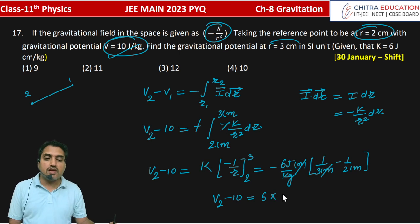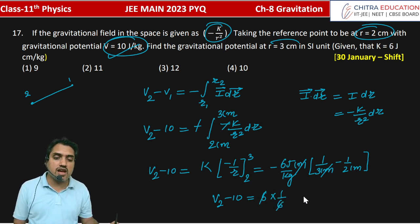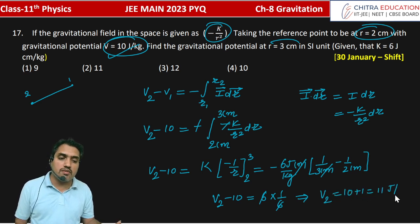6 to 6 will cancel. V2 value here will be 10 plus 1, that is equal to 11 joules per kg. So our answer will be 11 joules per kg.